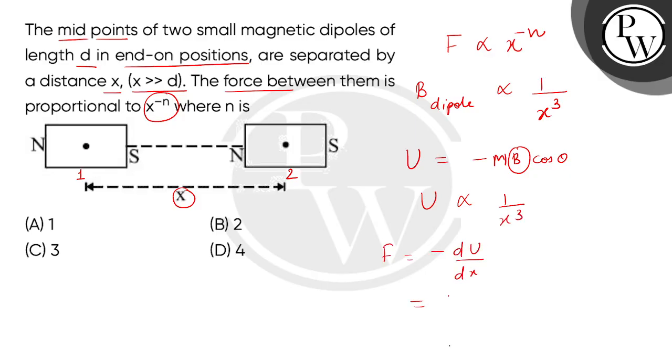When we put U to the value, that is x to the power minus 3, we have this proportionality that is minus 3 x to the power minus 4. That force is directly proportional to x to the power minus 4, so the correct answer is option d.